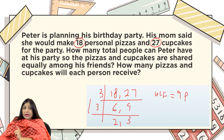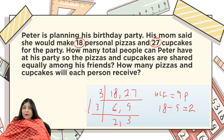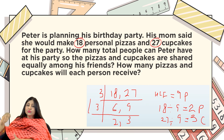The second part of the question: how many pizzas and cupcakes will each person get? Total pizzas are 18 ÷ 9 (HCF) = 2, so each person gets 2 pizzas. Total cupcakes are 27 ÷ 9 = 3, so each person gets 3 cupcakes. Each person will receive 2 pizzas and 3 cupcakes.